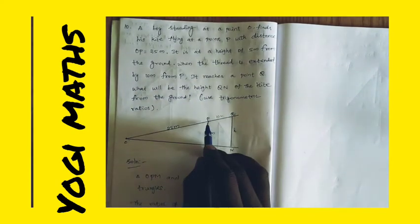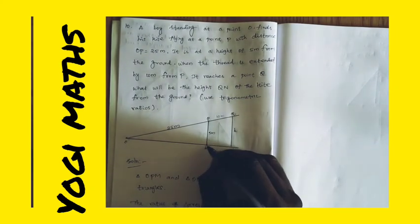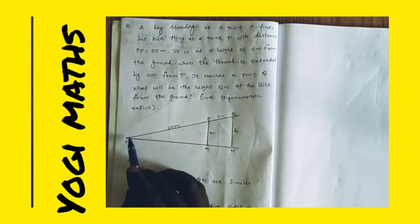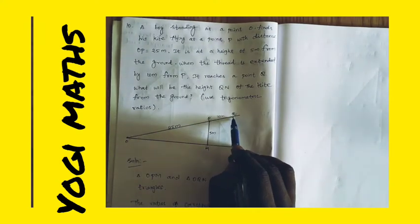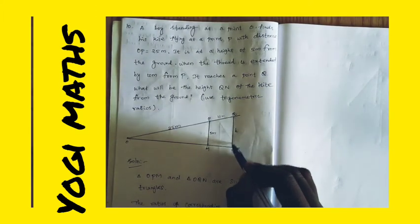The distance is 25 meters. The ground level is 5 meter height. The length of the kite is extended by 10 meters. If you extend by 10 meters, you can find it by 10 meters. This is a trigonometric ratio.